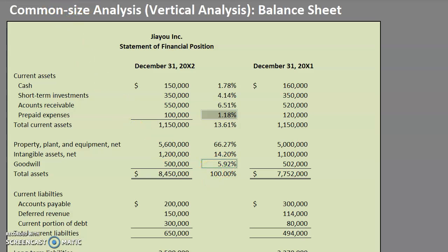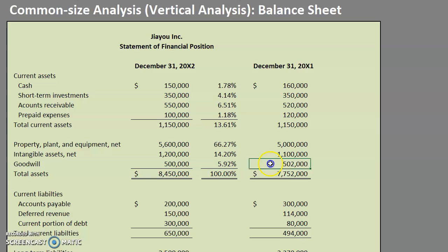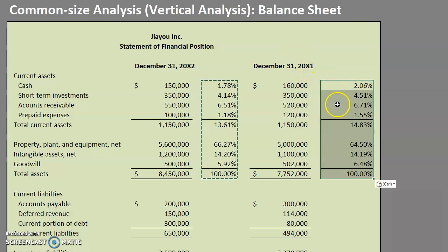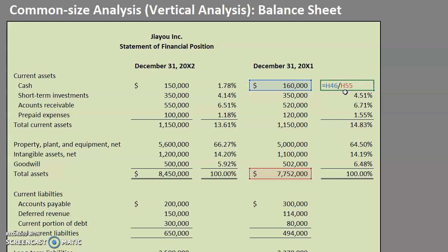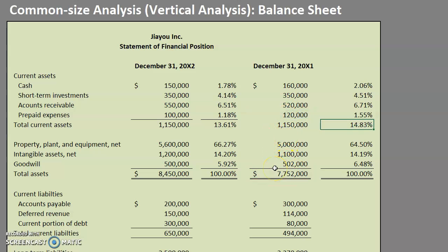Let's put those math lines in quickly. We're actually going to do something similar for our 20x1 year, our prior year. As you can see, everything is showing every single line item as it relates to the total assets amount there.